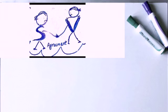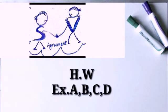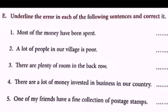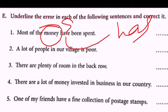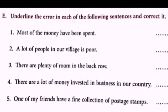I hope you have understood all the rules of subject-verb agreement and will apply them in further exercises. Your homework will be exercises A, B, C, and D. Now let's do Exercise E, the last exercise of this chapter, where you have to rectify errors of subject-verb agreement. First: 'Most of the money have been spent.' Here 'money' is a singular noun, so the verb should be 'has.'